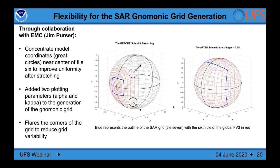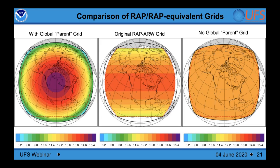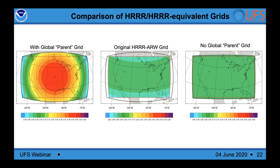For the regional FV3 system, we want uniform grid cell sizes with small aspect ratio variation and map scale factor variation across the domain. In collaboration with Jim Purser at EMC, we now have the ability to generate a regional grid with very uniform grid attributes over essentially any sub-global domain. The enhanced Schmidt gnomonic grid capability for regional FV3 is the basis for grids going into operations with the RRFS. This grid has almost no map scale factor variation for large CONUS-sized domains, far less than the NAM, RAP, or even the ARW grid.